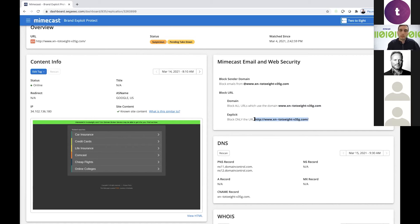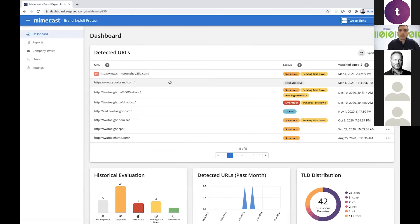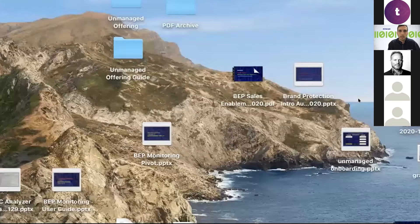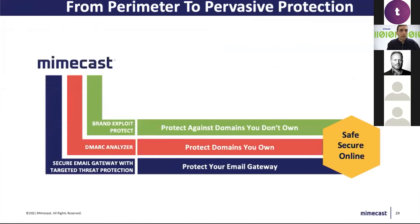You can block the sender domain so no emails from that domain enter your company, and also block a URL using the web security feature so nobody can click a link within that domain — or just block a specific subdomain if the attack is only there. Weekly and monthly reports are generated automatically and available for download. Very little is needed from you on this dashboard — it's mainly for visibility. The three pillars of Mimecast: at the bottom, the email gateway for safe inbound emails; DMARC protecting domains you own; and on top, Brand Exploit Protect protecting against domains you don't own that are out there in the world.